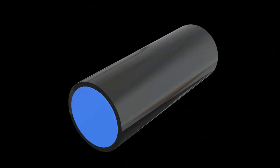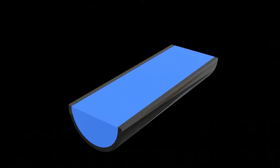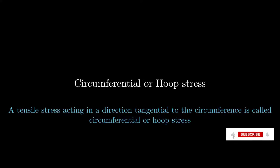In this video, we are going to learn what is circumferential or hoop stress and how to derive its formula. Circumferential or hoop stress is basically a tensile stress acting in a direction tangential to the circumference, called circumferential or hoop stress.